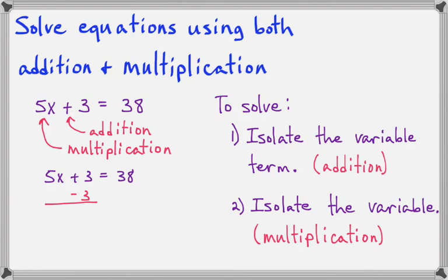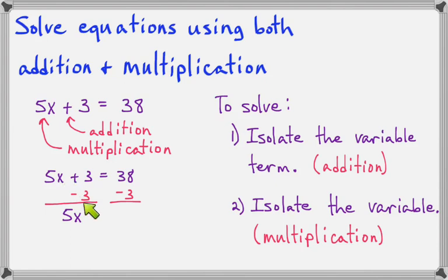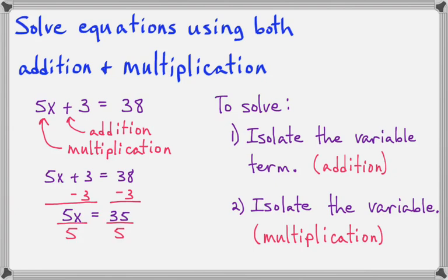In this case, I'm going to eliminate the plus 3 by doing minus 3 on both sides. That leaves me 5x on the left side, because 5x plus 3 minus 3 all adds up to 5x. And on the right side, 38 minus 3 is 35. Now I need to get rid of this coefficient of 5, so I'll divide both sides by 5, and that simplifies and gives me x equals 7. So our solution is x equals 7.